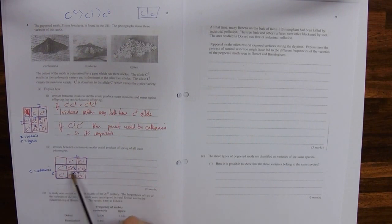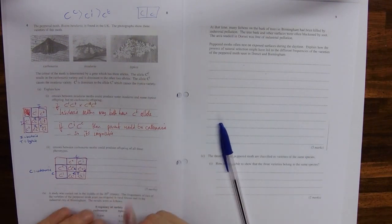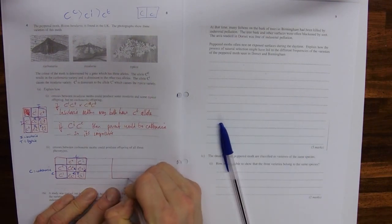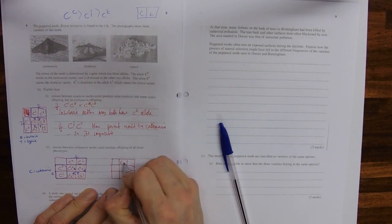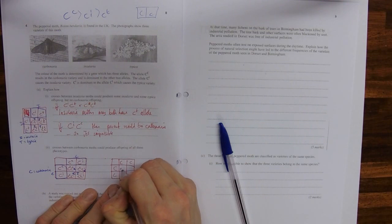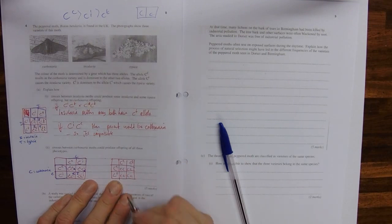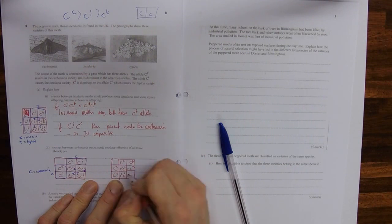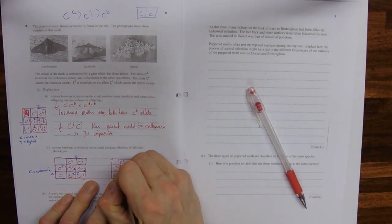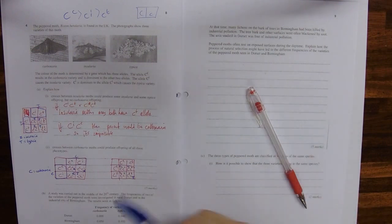So we've got carbonaria moths producing insularia. If we did the same sort of thing with tipica, you could also do that. Notice how we're always following our golden rules: the gametes have got one copy, individuals have got two copies. It's the same thing but just with Ts there. So C, C, CT, CT, TT. These will be carbonaria, and this will be tipica.